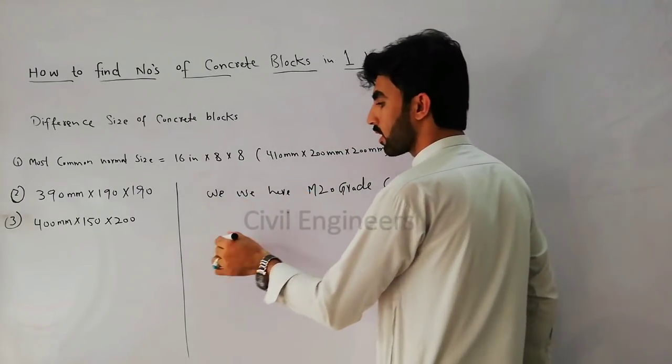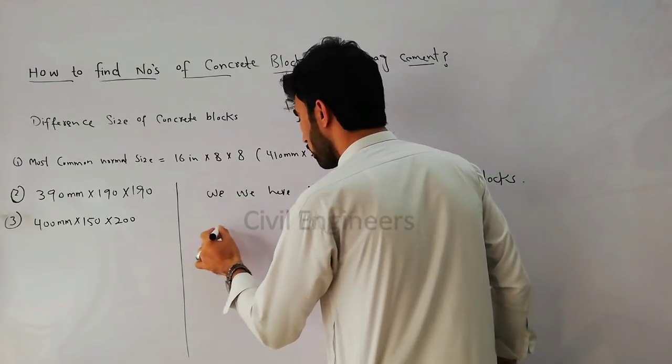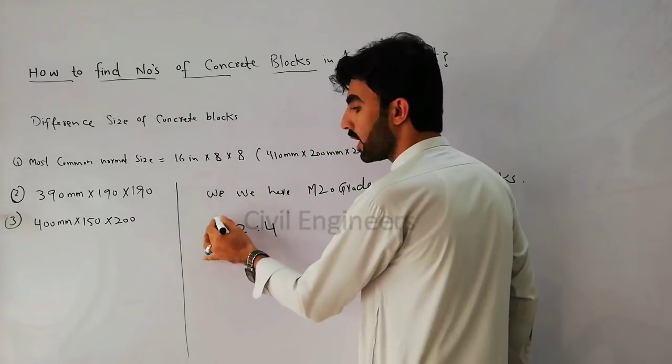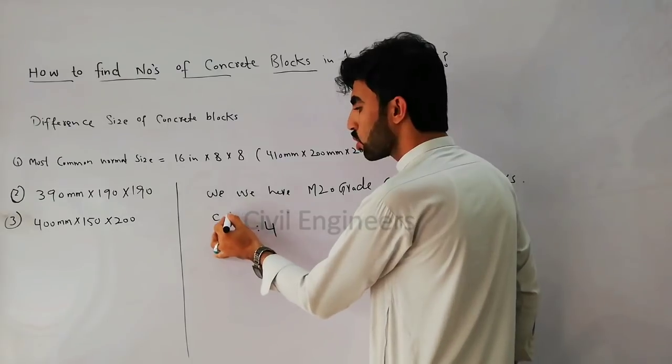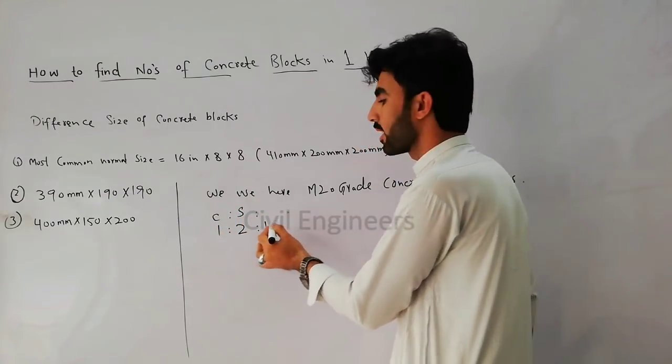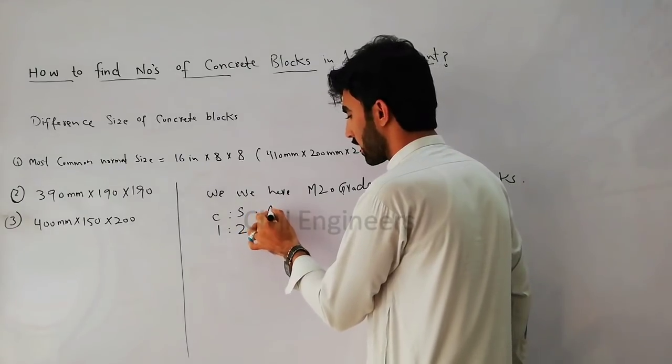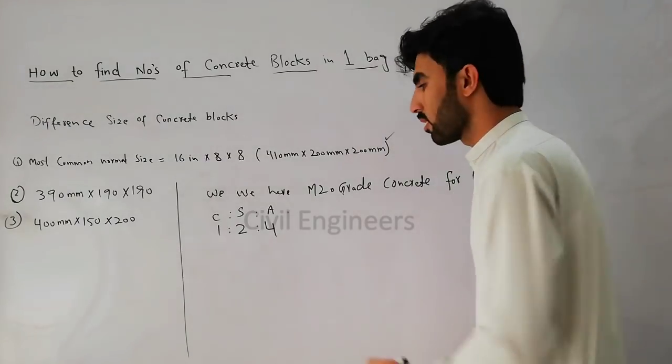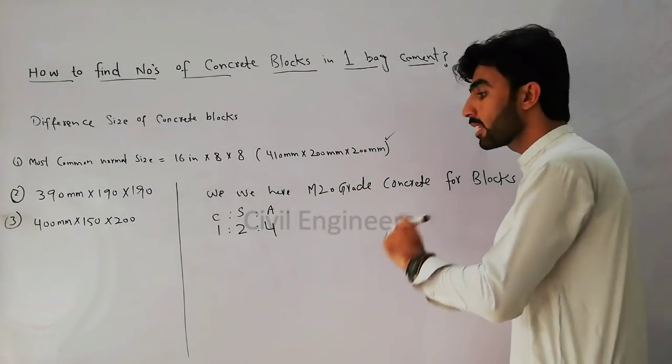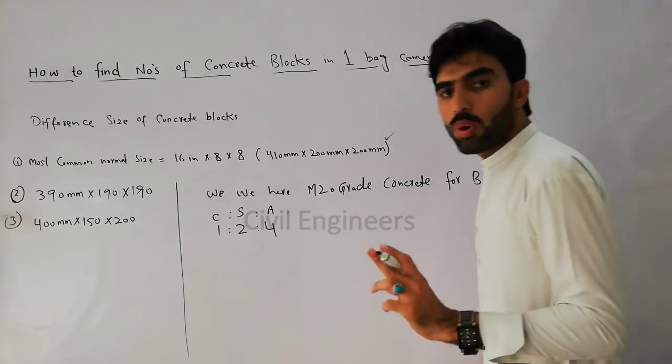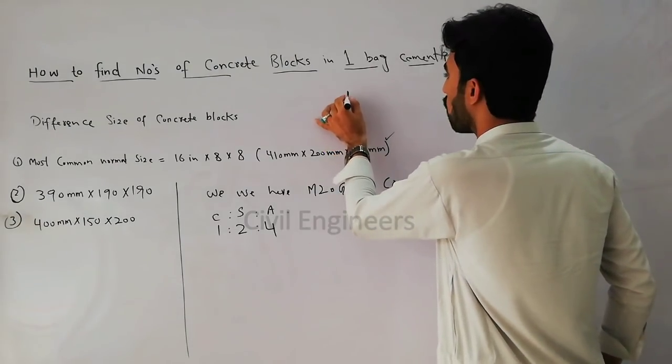That is 1 part cement, 2 parts sand, and 4 parts aggregate. One bag of cement weight is 50 kg. This is the standard weight of one bag of cement.